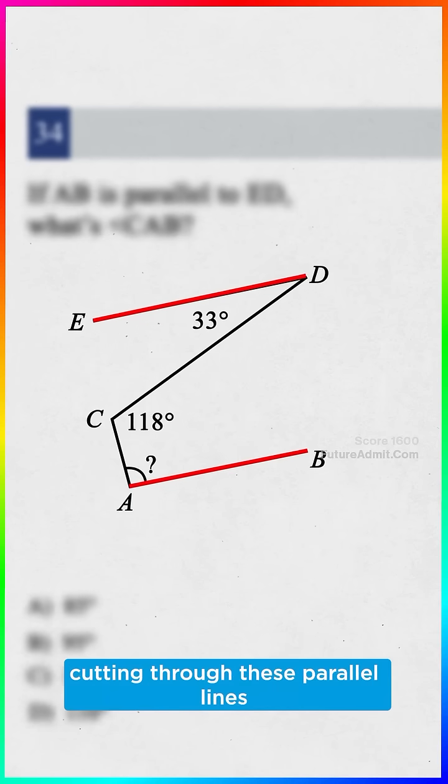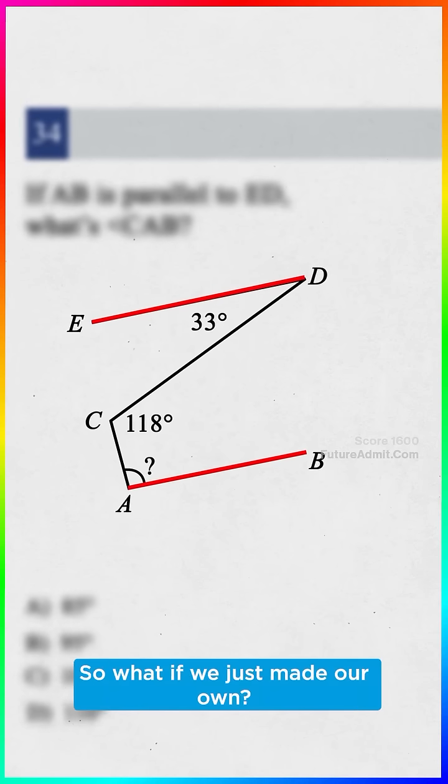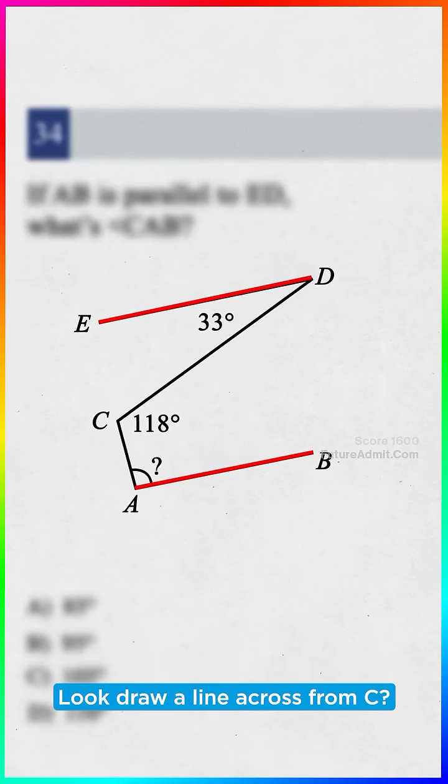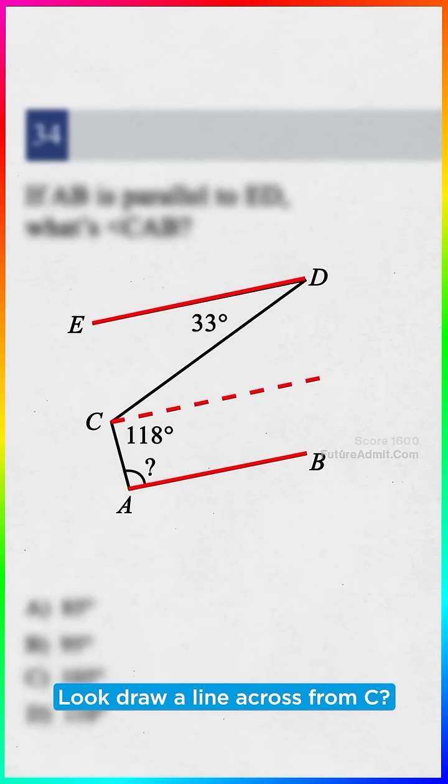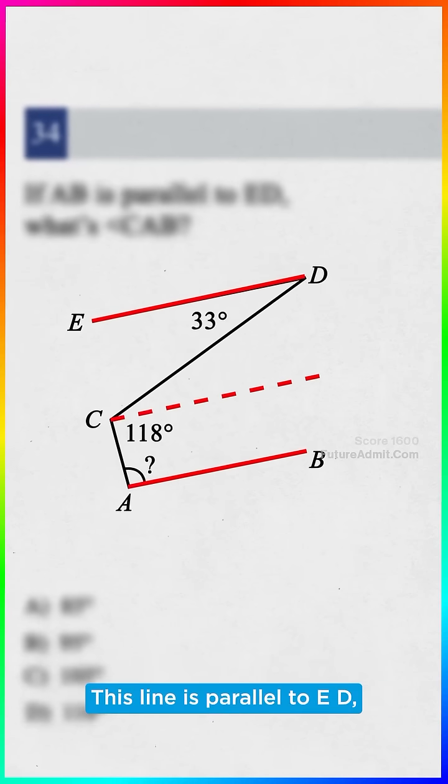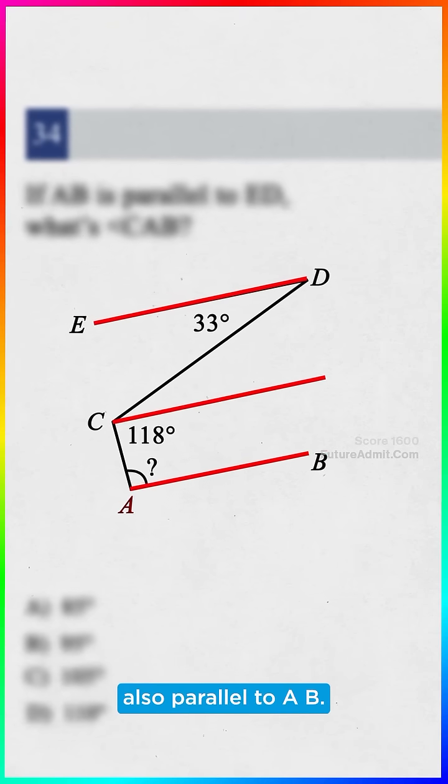But there's no line cutting through these parallel lines for it to be a transversal. So what if we just made our own? Well, look, draw a line across from C. This line is parallel to ED, which means it's also parallel to AB.